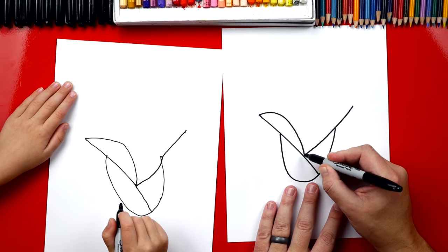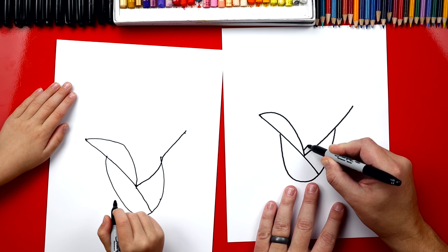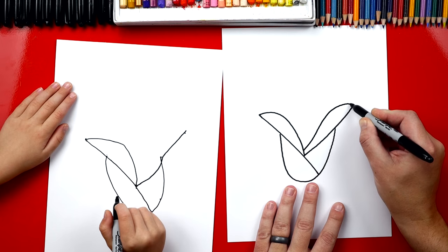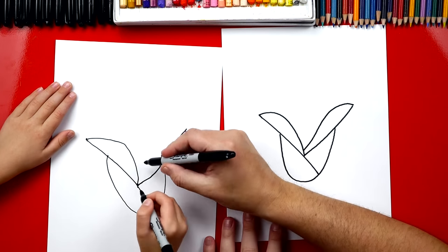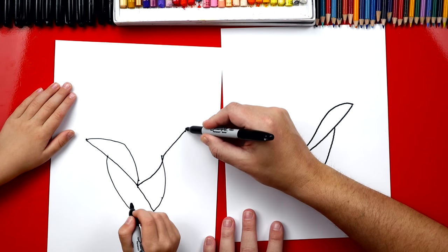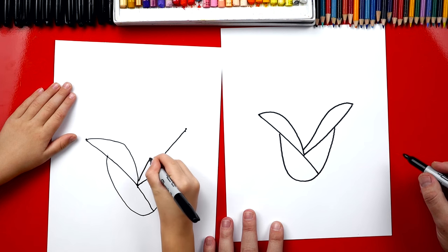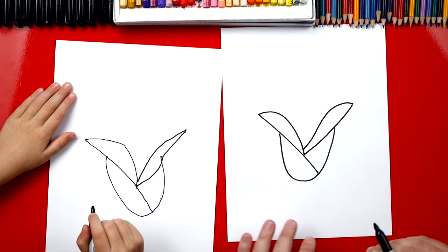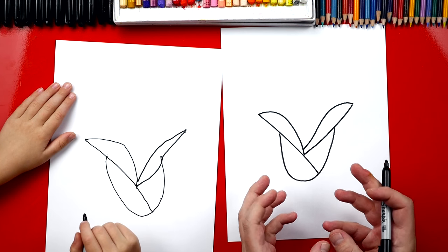Now we're going to do that same thing on the other side. We're going to draw up, curve, and then touch. Is that cool? And start here, do a curve, and come point to a point right there. Now this is the husk, the green part of a corn.